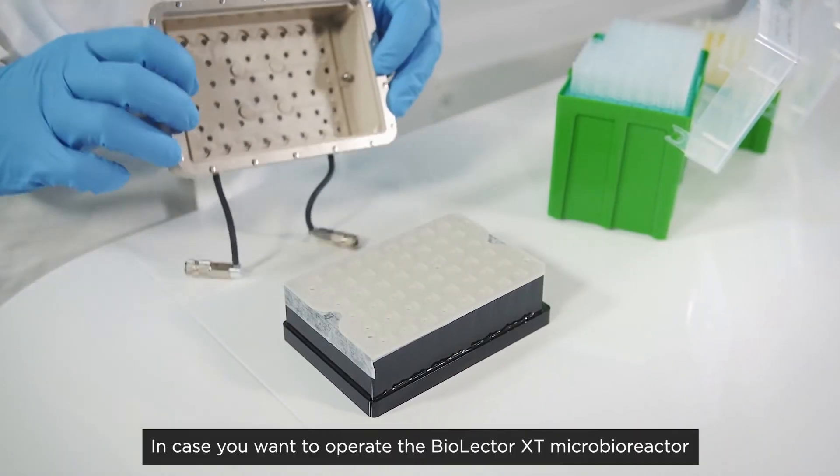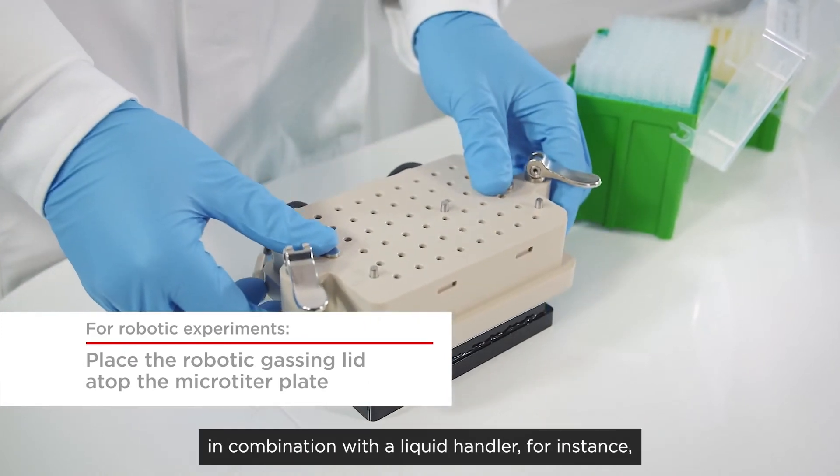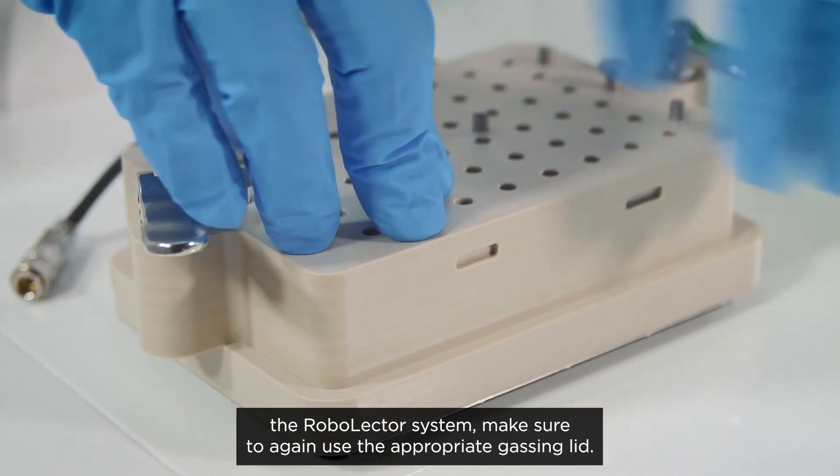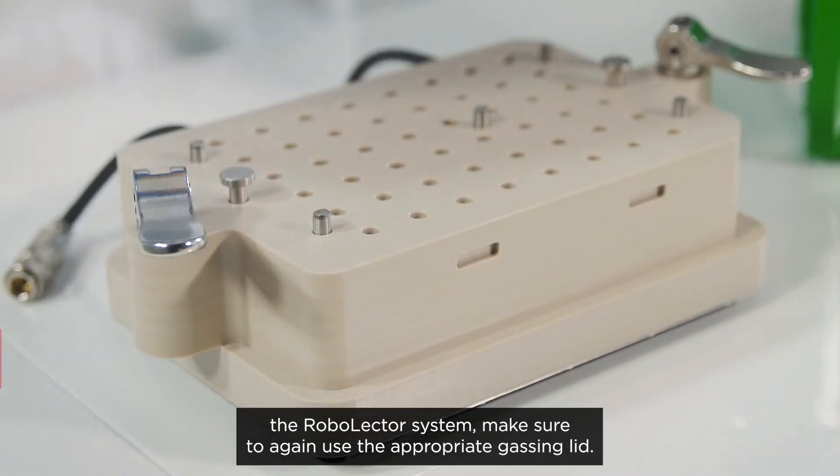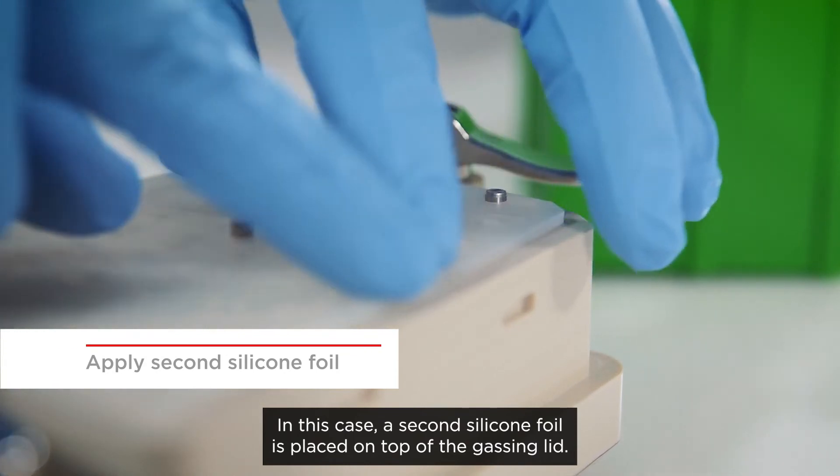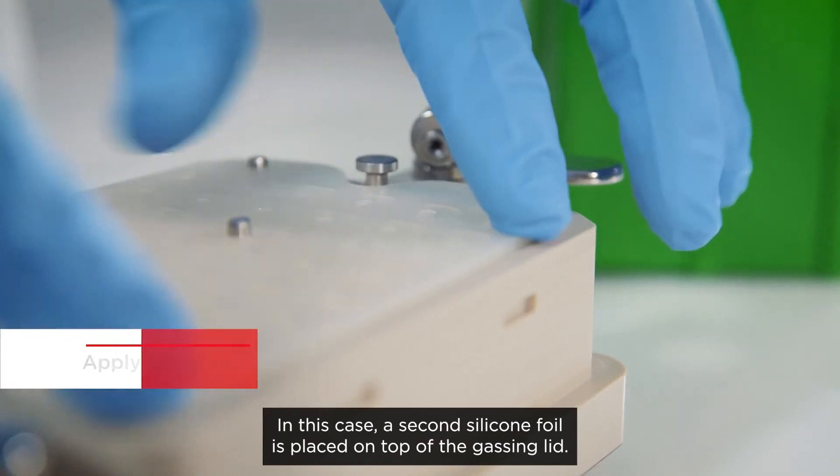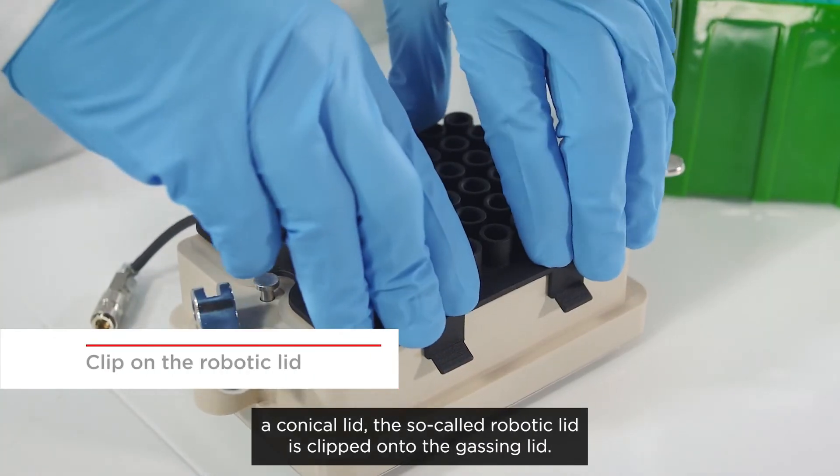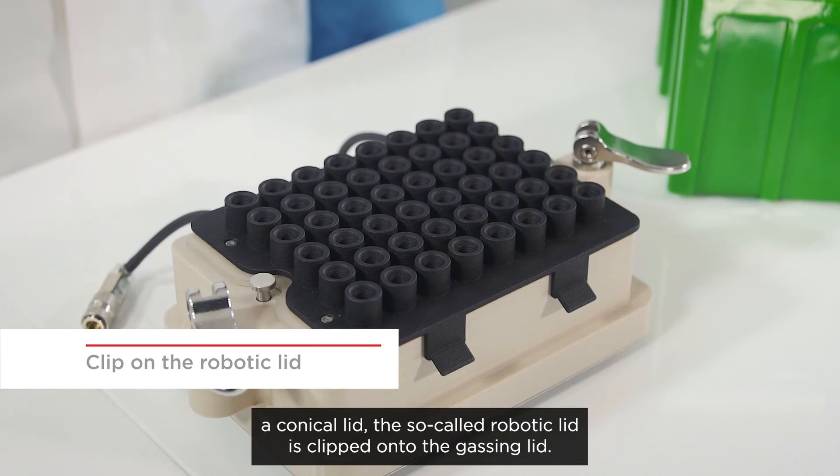In case you want to operate the BioElector XT Microbioreactor in combination with a liquid handler, for instance the RoboElector system, make sure to use the appropriate gassing lid. In this case, a second silicone foil is placed on top of the gassing lid. For guiding the liquid handler's pipetting needles, a conical lid, the so-called robotic lid, is clipped onto the gassing lid.